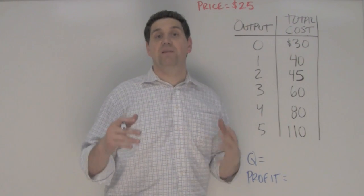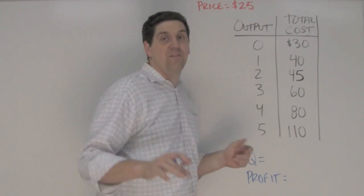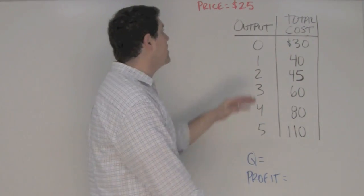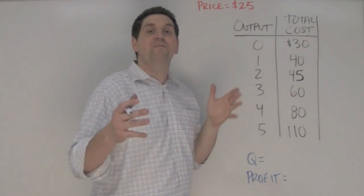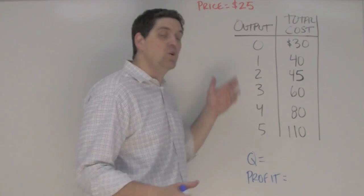Now this question is all about profit maximization and determining the right quantity that a firm should produce. In this situation the price is $25. You cannot figure out how much a firm should produce unless you have price.